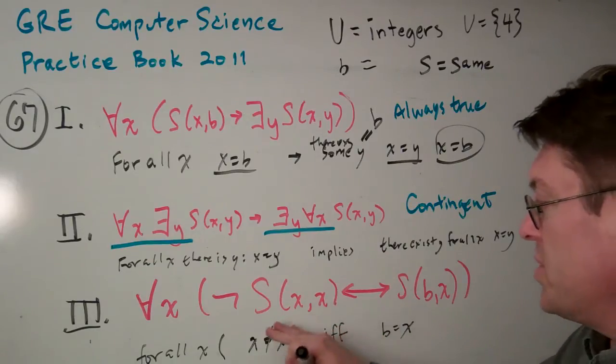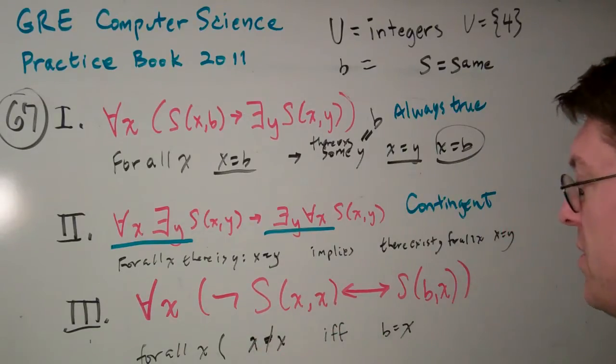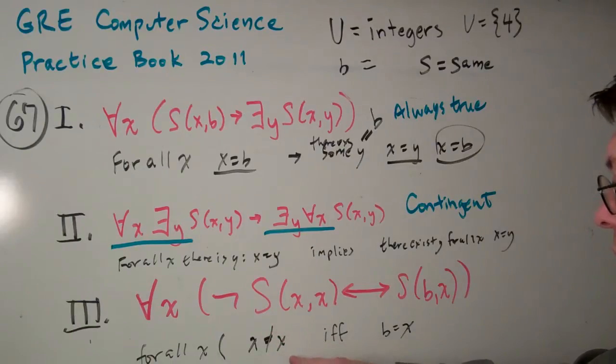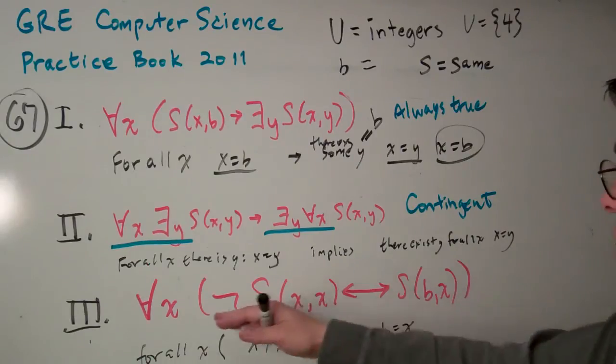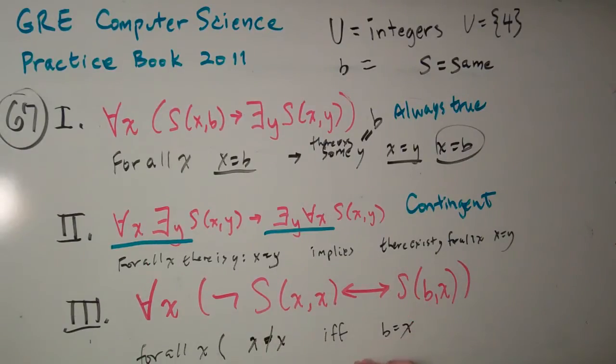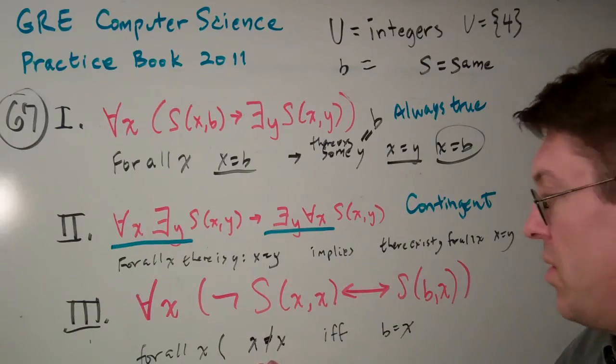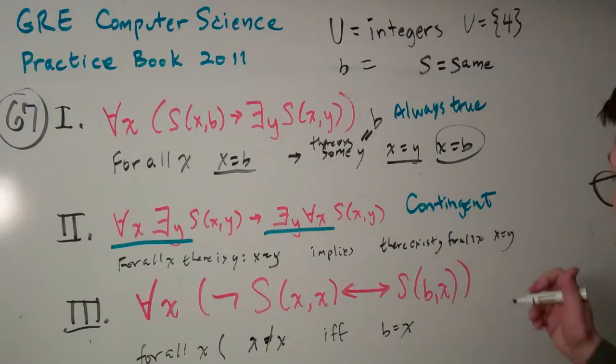But, I mean, let's suppose that you had some other interpretation of S, whatever it would be. It's not true, both directions, that B equals X is the same as X is not equal X. So this one basically is always going to be false.